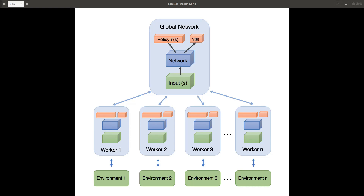Intuitively, advantage lets us measure the benefit of taking an action over following the policy at some given state. The Actor-Critic aspect uses an architecture that shares layers between the policy and value functions. At a high level, the A3C algorithm uses an asynchronous updating scheme operating on fixed-length time steps in continuous environments and batched time steps in episodic environments. Each worker performs six steps: fetch global network parameters, interact with the environment following the local policy, calculate values and policy losses, get gradients from losses, update the global network, and repeat.